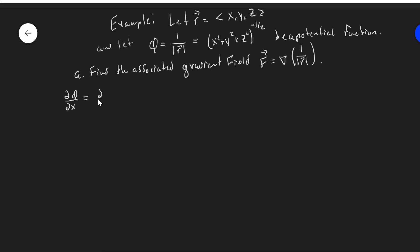So this is derivative with respect to x, x squared plus y squared plus z squared to the minus 1 half. Using the chain rule, minus 1 half x squared plus y squared plus z squared to the minus 3 halves times the derivative of the inside, 2x.